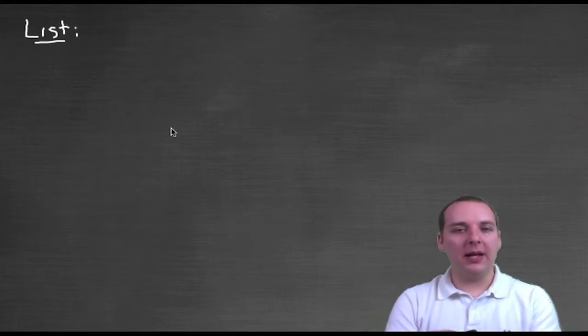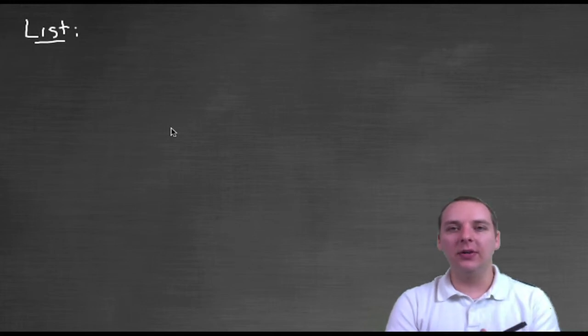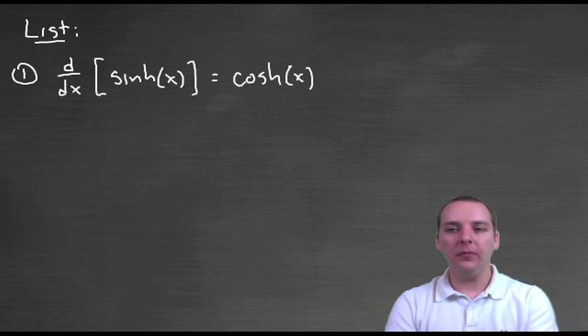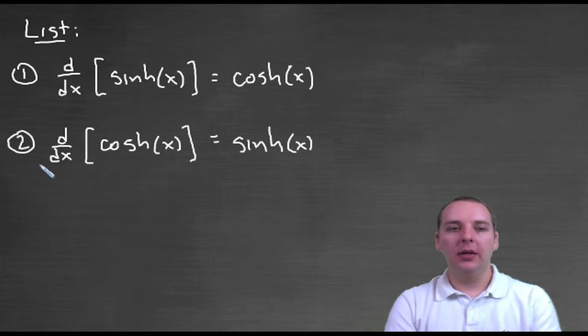Okay, so now, sorry that was kind of a long discussion. Here's a condensed list of the derivatives you need to know. The first two we've done already. Derivative for hyperbolic sine is hyperbolic cosine. The derivative for hyperbolic cosine is hyperbolic sine. We know those two.